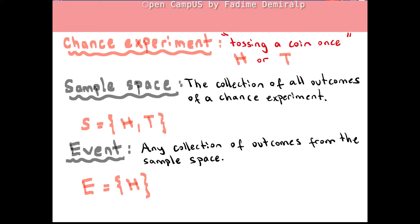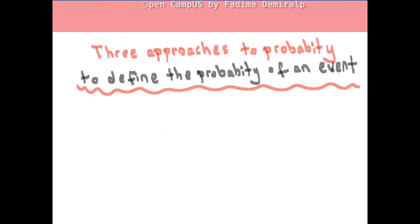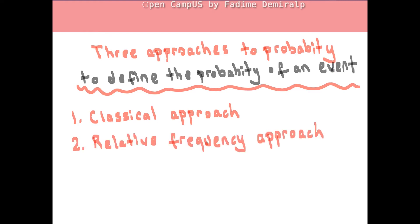Next, we will define the probability of an event using three approaches to probability: the classical approach, the relative frequency approach, and the subjective approach to probability.